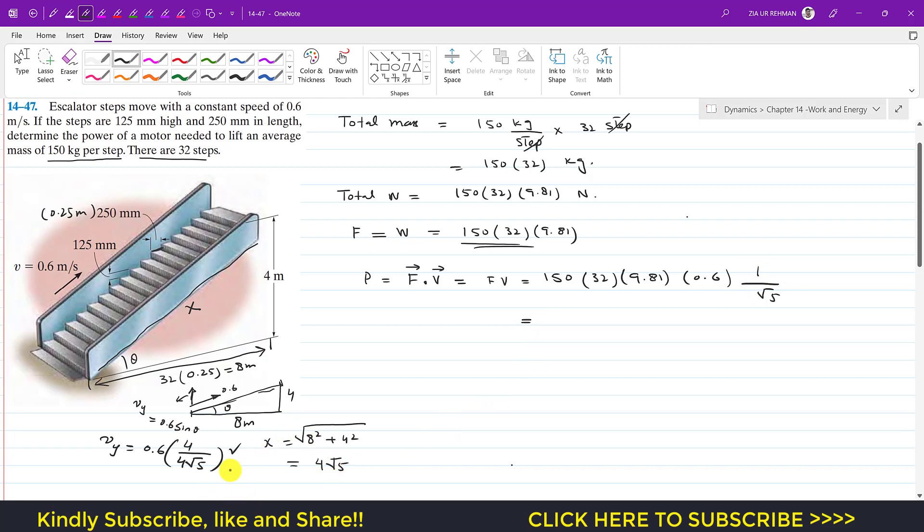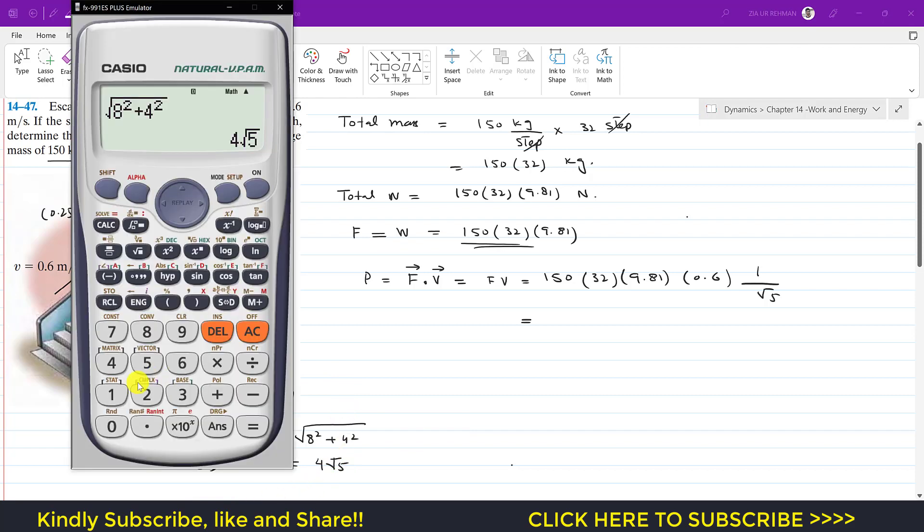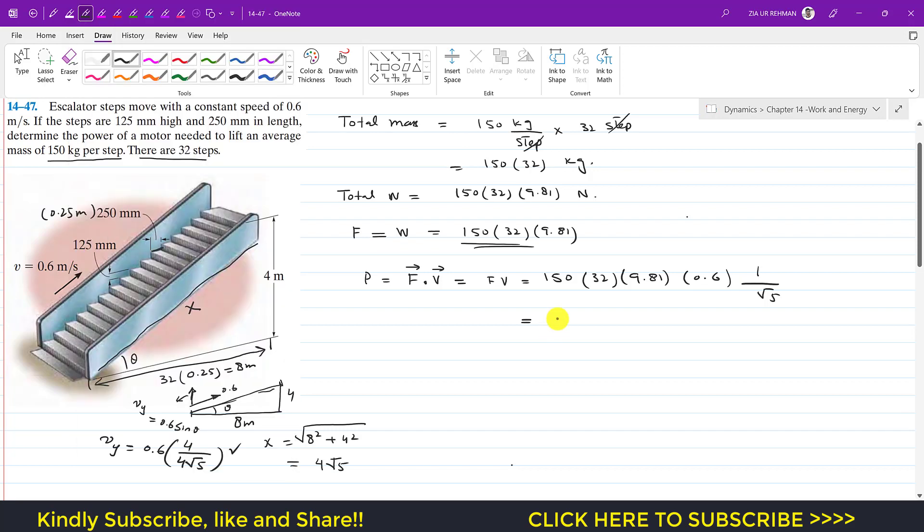This will give us the power that will be required by the motor to lift this much weight. So that is 150 multiplied by 32 multiplied by 9.81 multiplied by 0.6 multiplied by 1 divided by square root 5. So this is 12,635 watts. We can say that this is 12.635 kilowatts.